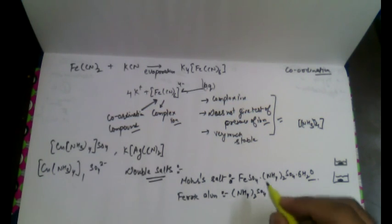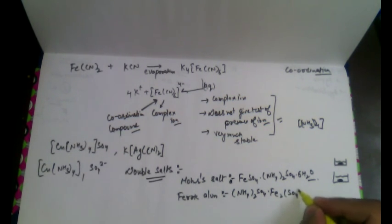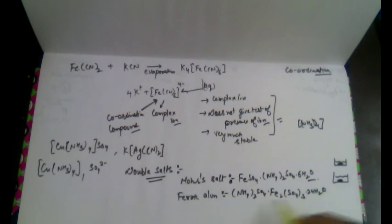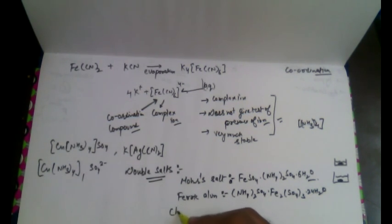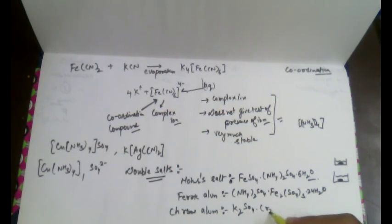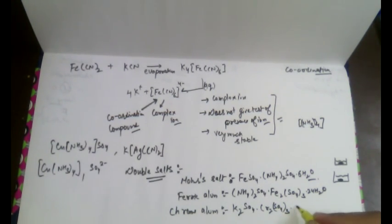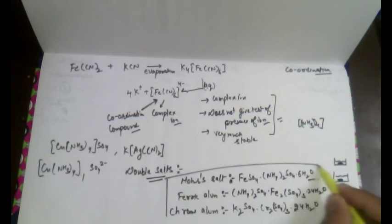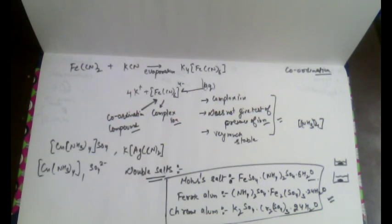Similarly, we have ferric alum as another example of a double salt. Another example is chrome alum — when someone mentions chrome alum, you should at once say it uses the combination of potassium sulfate and chromium sulfate, crystallized with molecules of water. These are commonly used examples while attempting any NCERT questions.